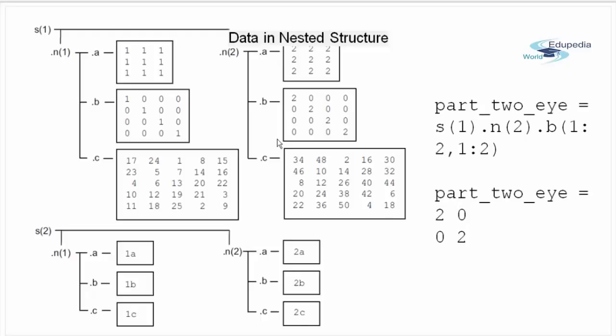All these three fields contain some sort of array and data. Then we have second element of S again containing two elements of structure N1 and N2 and each containing three fields A, B, C and each having some sort of data. We can access any part of the array by referring to first structure S then structure N and then the field name.